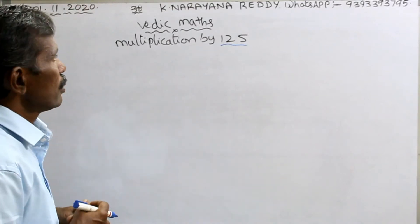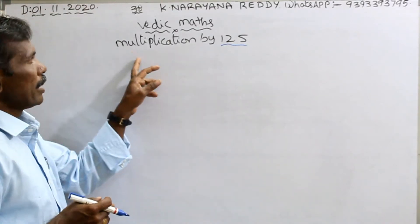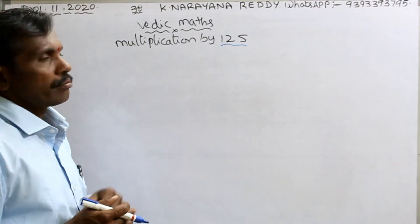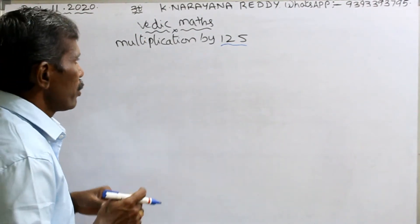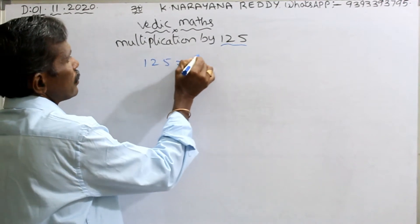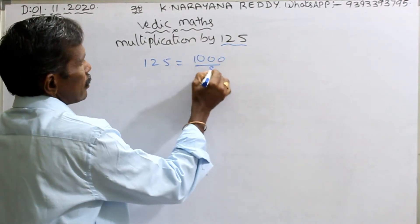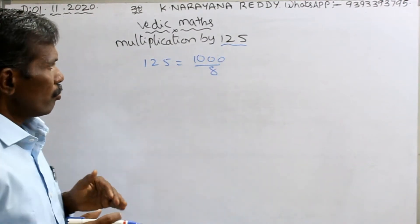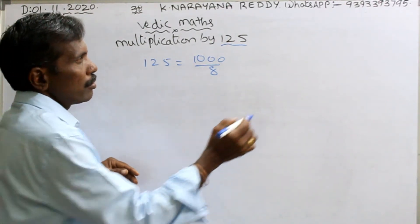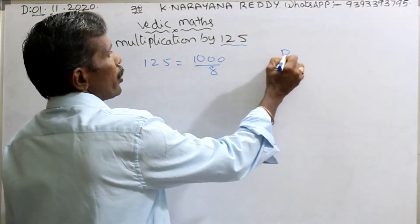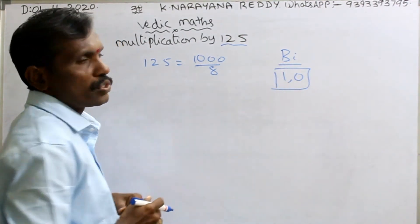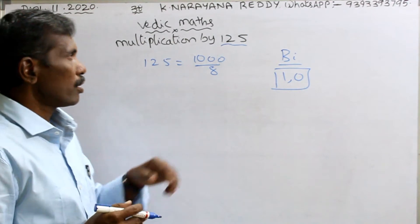Welcome to the channel. Multiplication by 125 — what to do in Vedic math? 125 can be written as 1000 divided by 8. 1000 means you are taking the binary system. Binary system contains 2 digits: 1 and 0. That's why you are taking 1000.